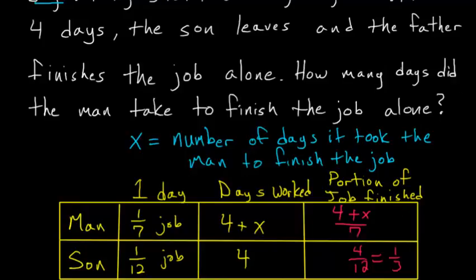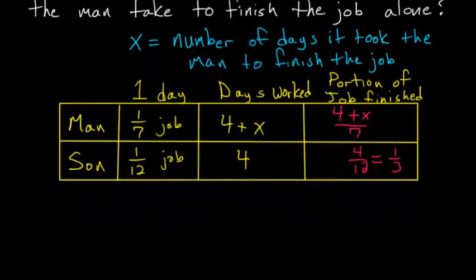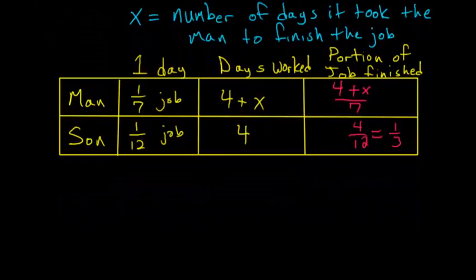And the relationship that we use for this problem is that the part of the job finished by the man plus the part of the job finished by the son is equal to one total job. So we can write that out.